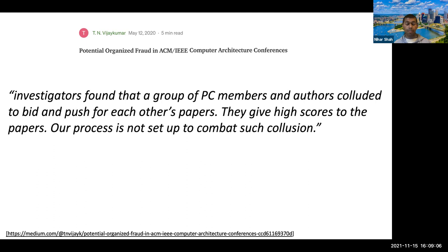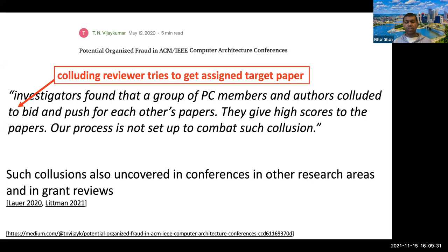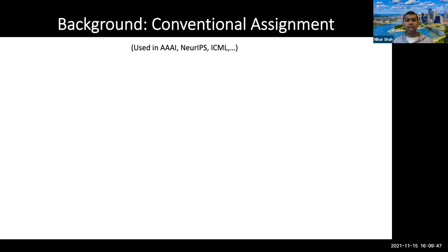Overall, this investigation concluded that the process is not set up to combat such collusion. These collusions have also been uncovered in conferences in ML and AI, as well as in grant proposal reviews. One key aspect of these collusions is that the colluding reviewer tries to get assigned the target paper. Here is how the assignment of reviewers to papers is done in most large conferences — it's automated and takes place in two phases.